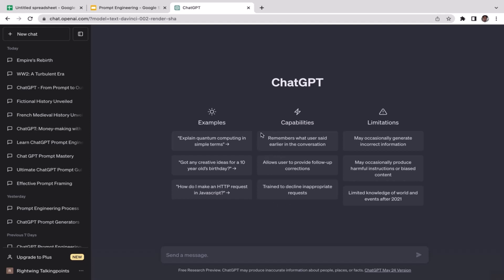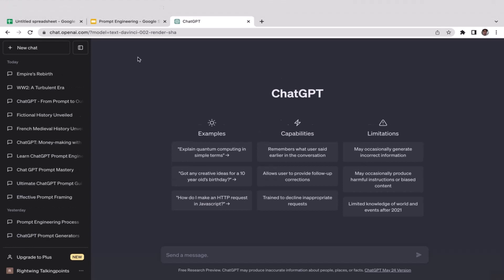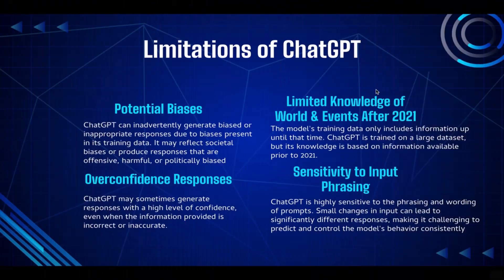Those are the capabilities of ChatGPT. In the next video we're going to talk about the limitations of ChatGPT. ChatGPT is actually pretty new AI technology — it was released in 2022, so it's been around five to seven months. Since it's so new, it's definitely not perfect and there are still rooms for improvement. Let's talk about the limitations you need to be aware of so you can set your expectations clearly.